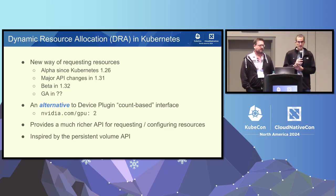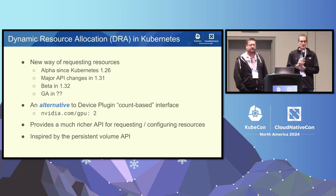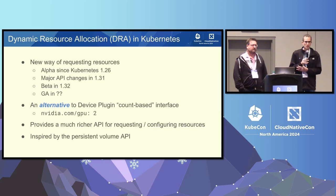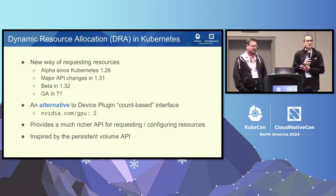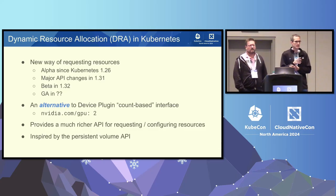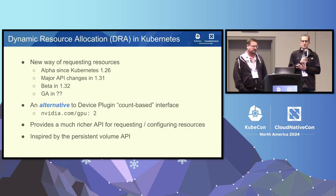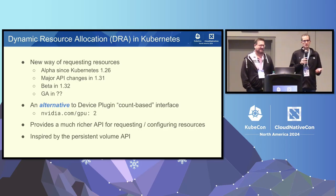Dynamic resource allocation has been ongoing for a while. You may have heard about it — it was alpha in previous Kubernetes releases. We finally figured out which part we actually can and want to promote towards beta and GA around the timeframe of Kubernetes 1.31. That's where we did a major overhaul of the entire API. It was a breaking change in 1.31, but it set us on a path to where the same API is almost unmodified as beta in 1.32. That is a big milestone, because now we are sure this API will be around for at least three releases.